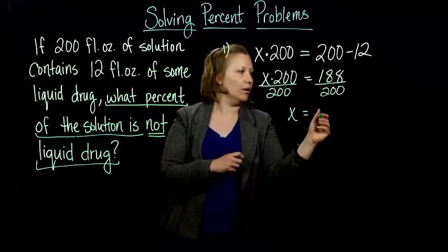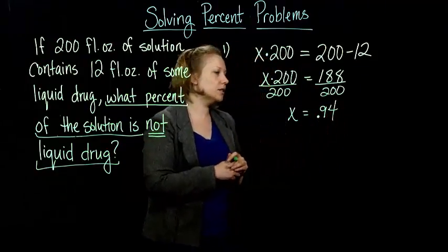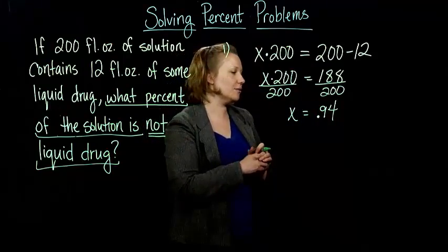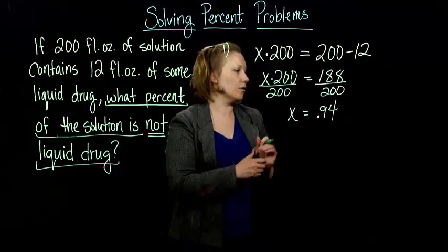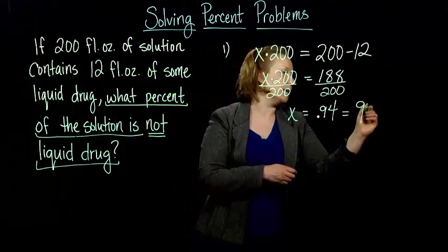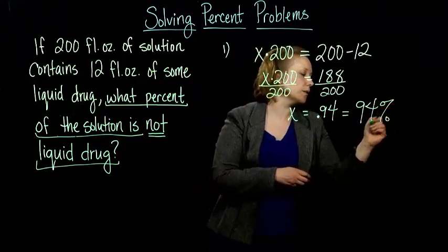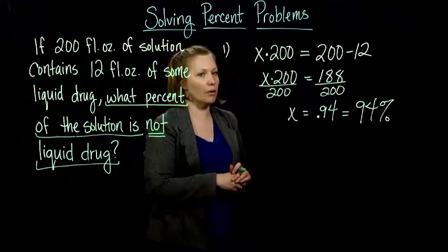So when I do that, I get 0.94, which isn't quite what we want, right? 0.94 isn't the percent, it's the part over the whole. So 0.94 we have to convert to a percent, which is 94%. So that's how we would set it up with an equation.